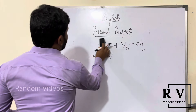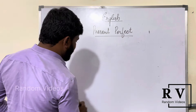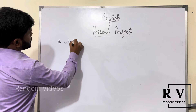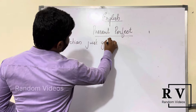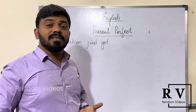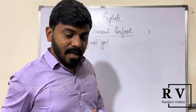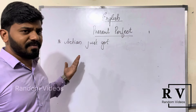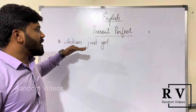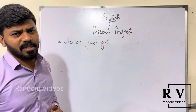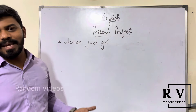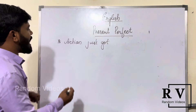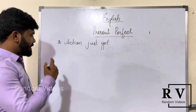Present perfect tense is used primarily to express that an action just got over. My definitions will keep changing — basically, definitions are not important; you must understand the concept. We don't care about exact definitions; we need to know how to use them in our daily conversation. In order to express an action that just got over, we use present perfect tense.